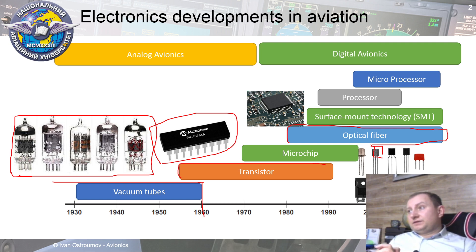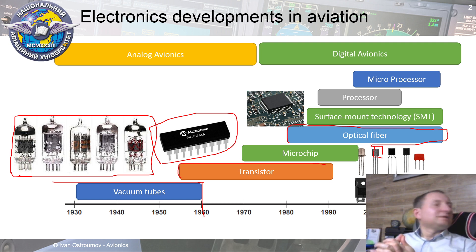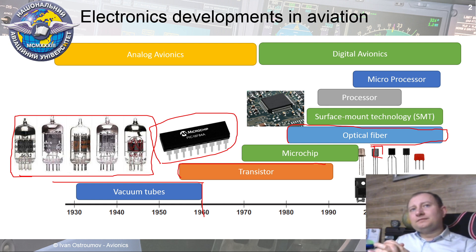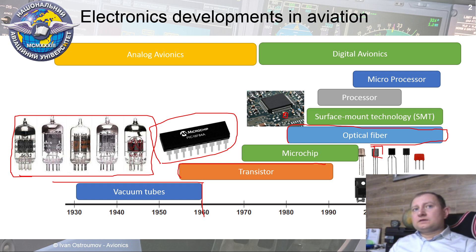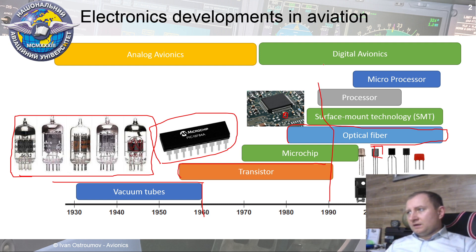A little bit later came the introduction of surface mount technology, though it needed maybe 10 or 20 years to become much more popular. Nowadays 90 percent of electronics is made based on SMT technology. It helps to reduce size because only a small piece of metal is required to connect to the main board. SMT components are also small in size, which helps reduce weight.